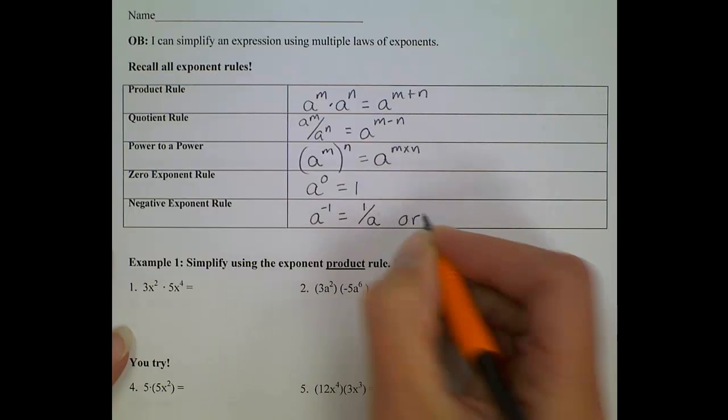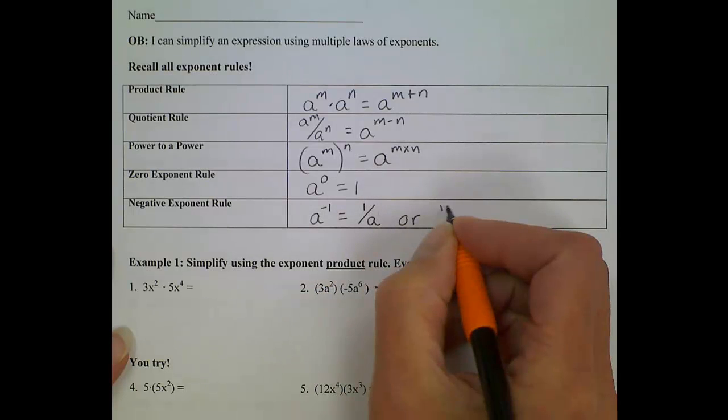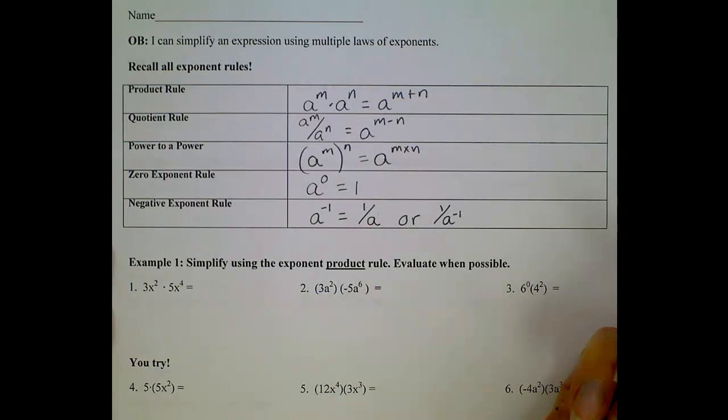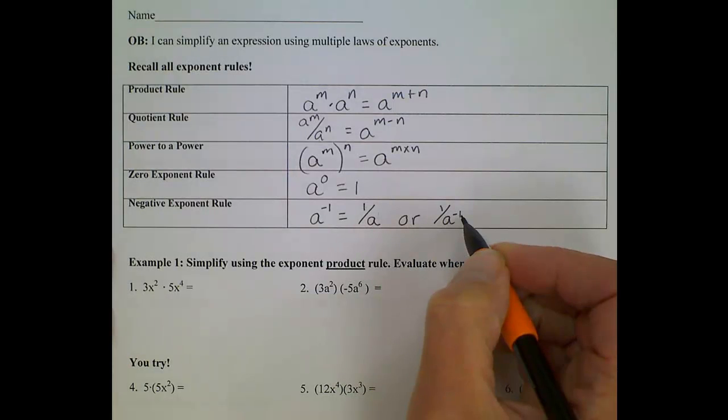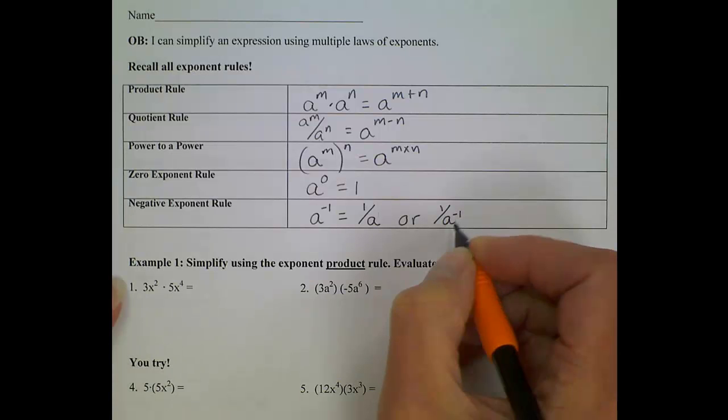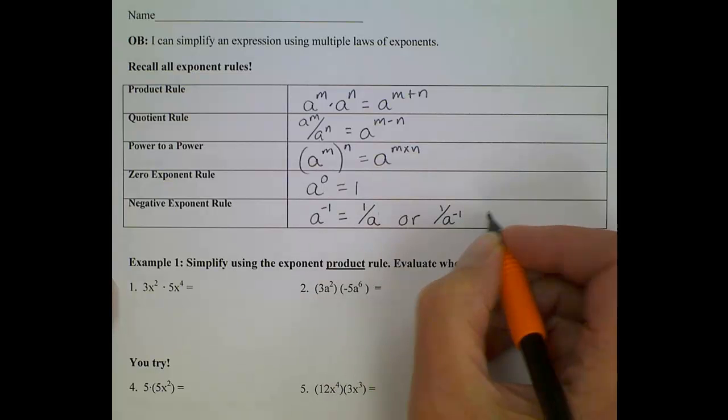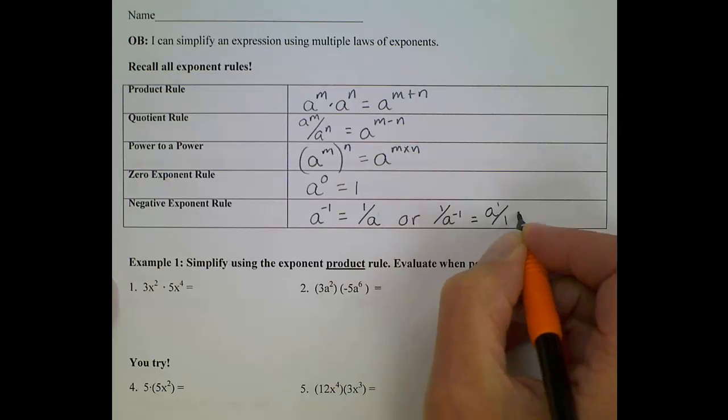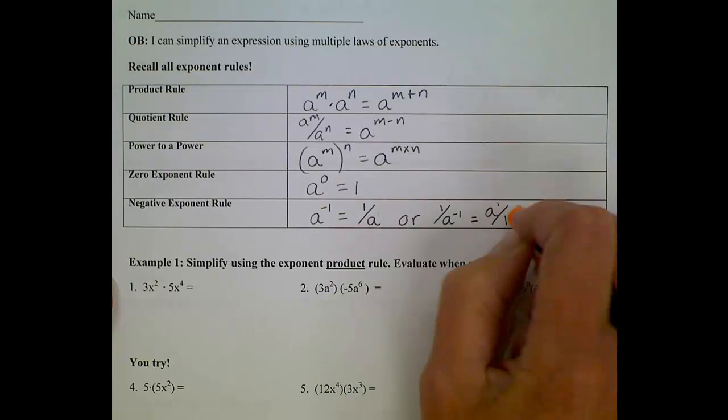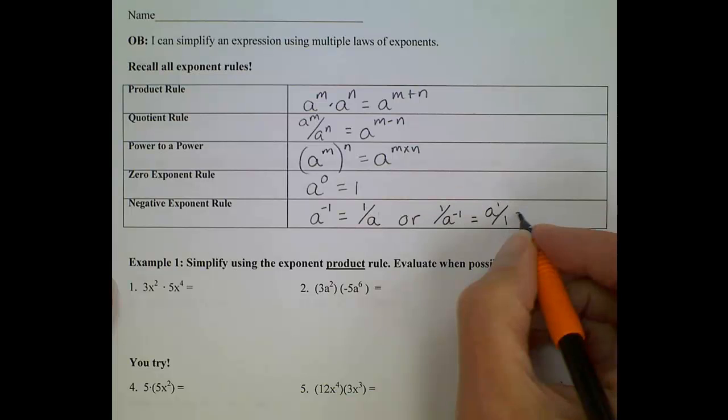Sometimes it's a little confusing when that negative exponent actually shows up in the denominator. So if we have 1 over a to the negative 1, we sort of flip our fraction, and what's in the denominator becomes the numerator. So this is the same as a to the first over 1, or just a.